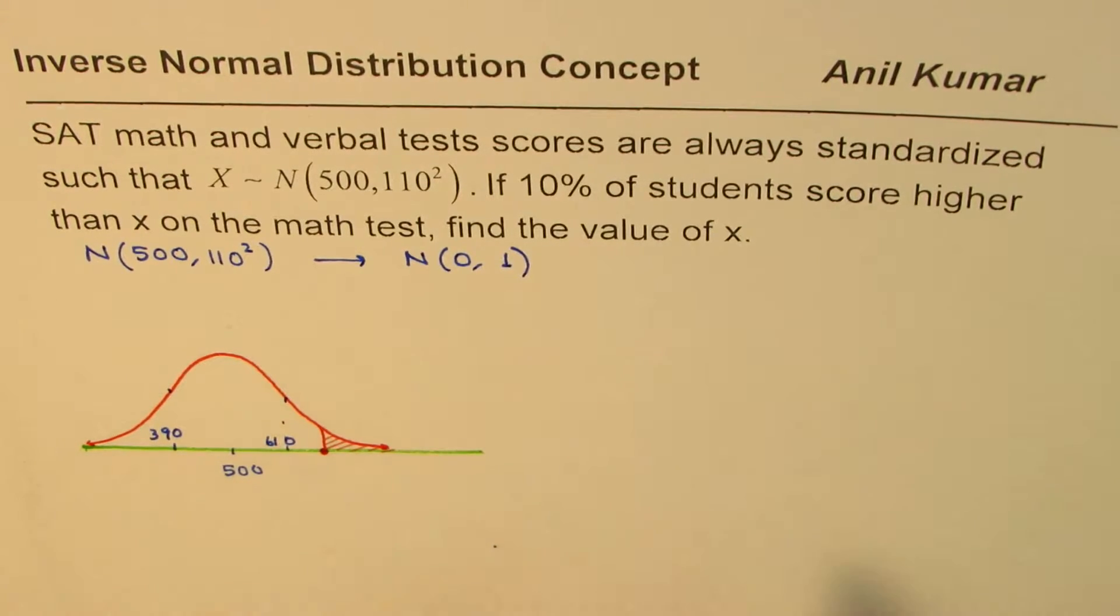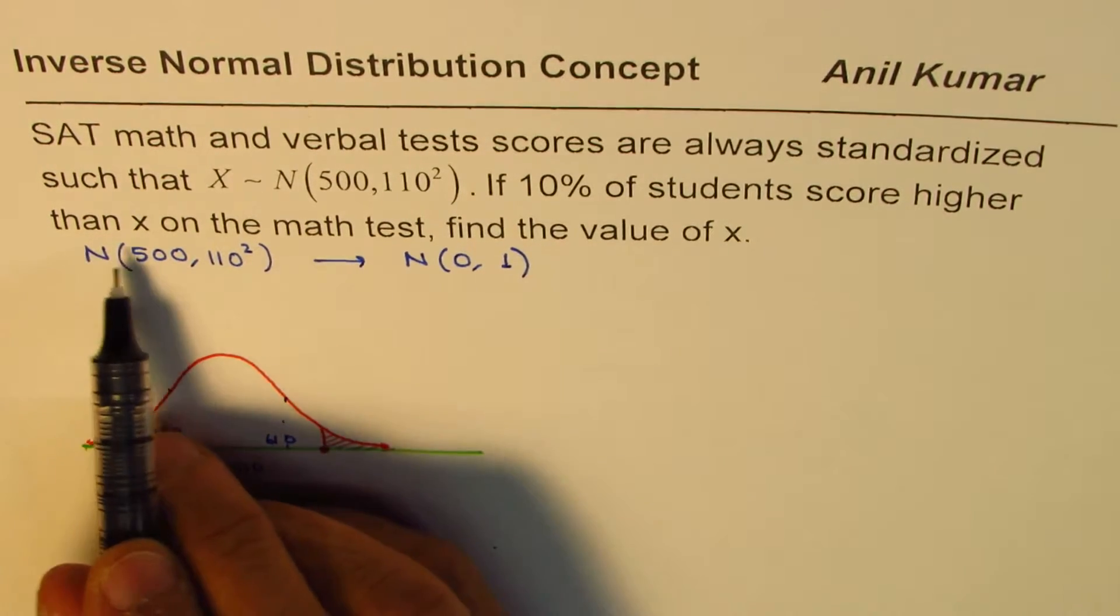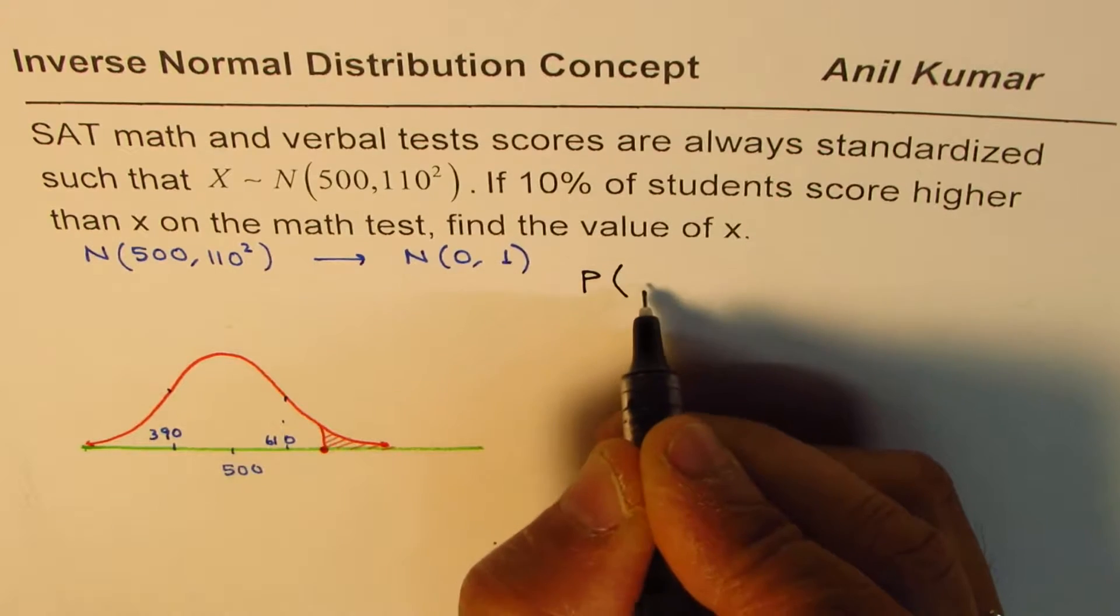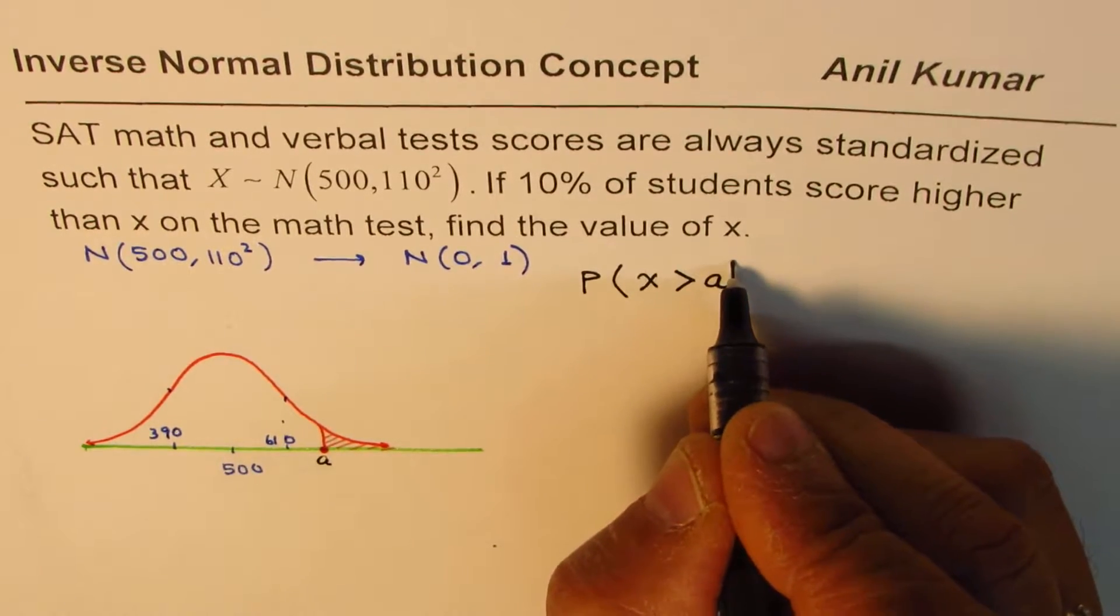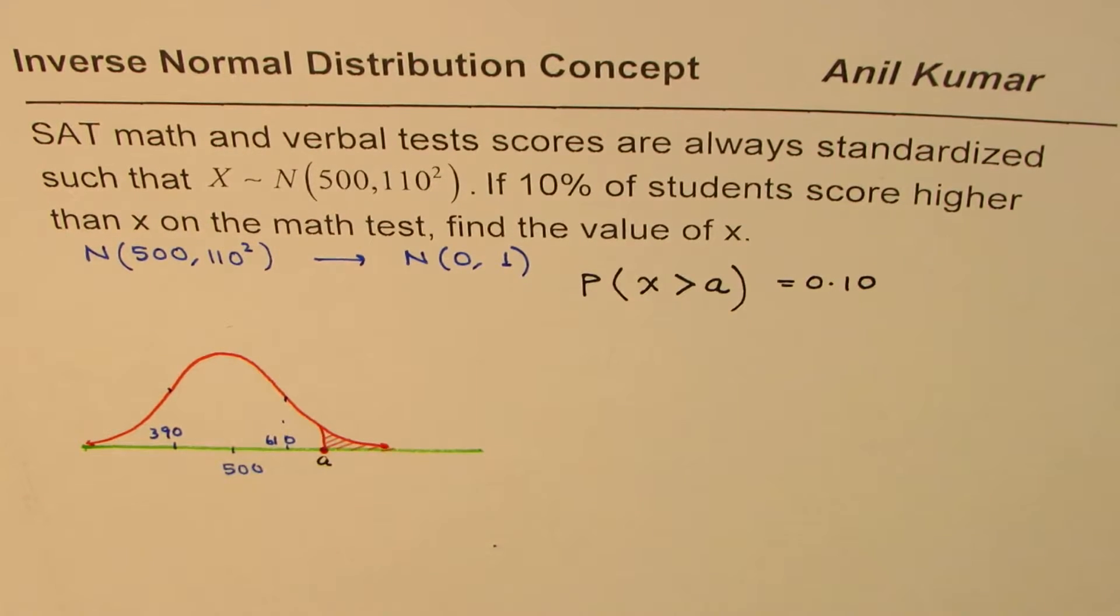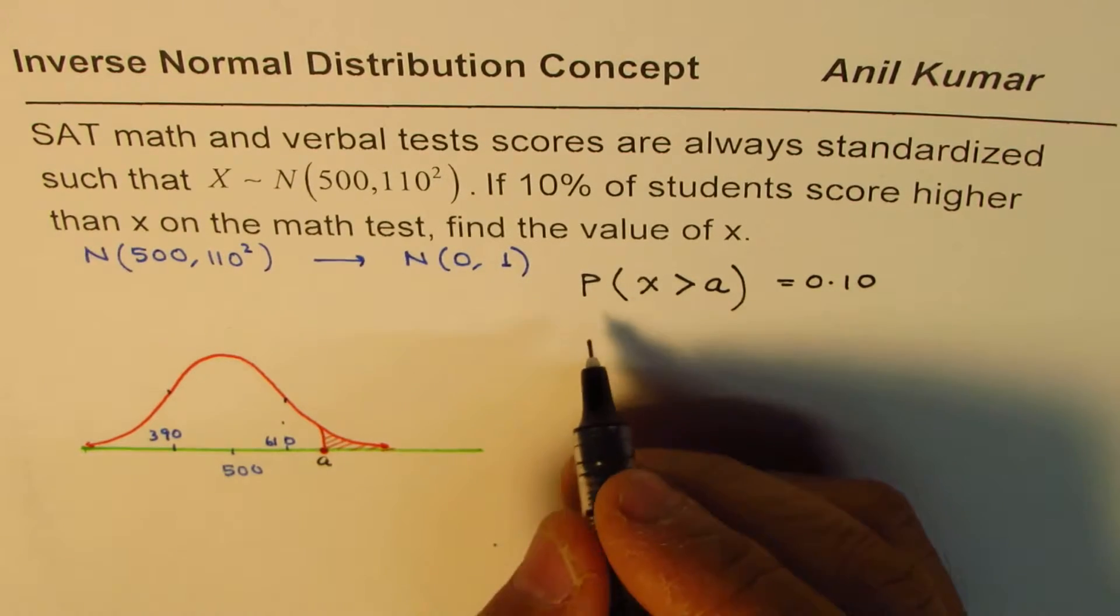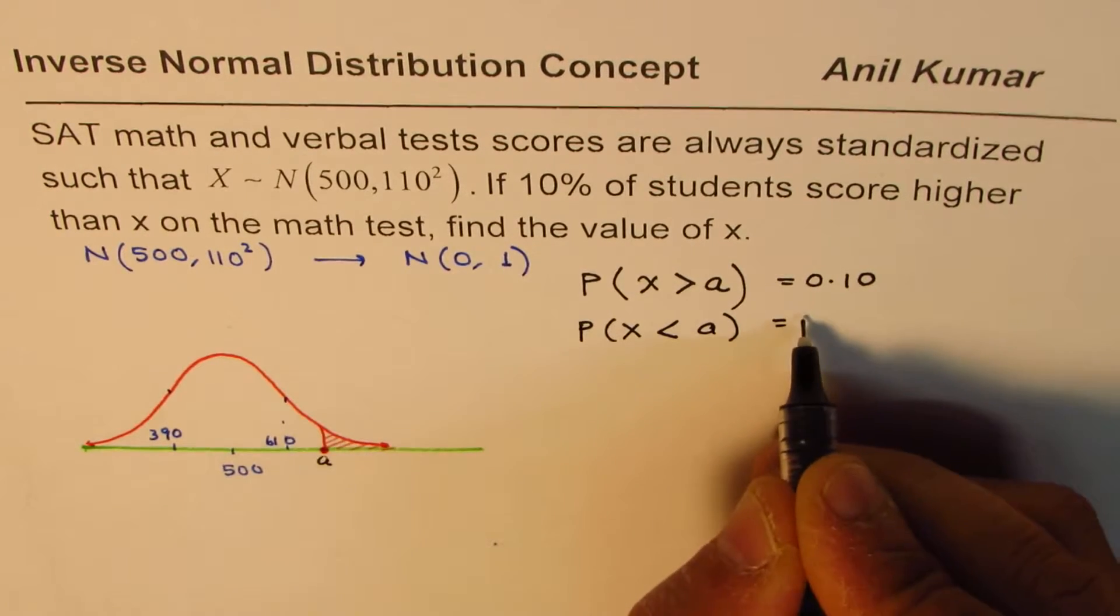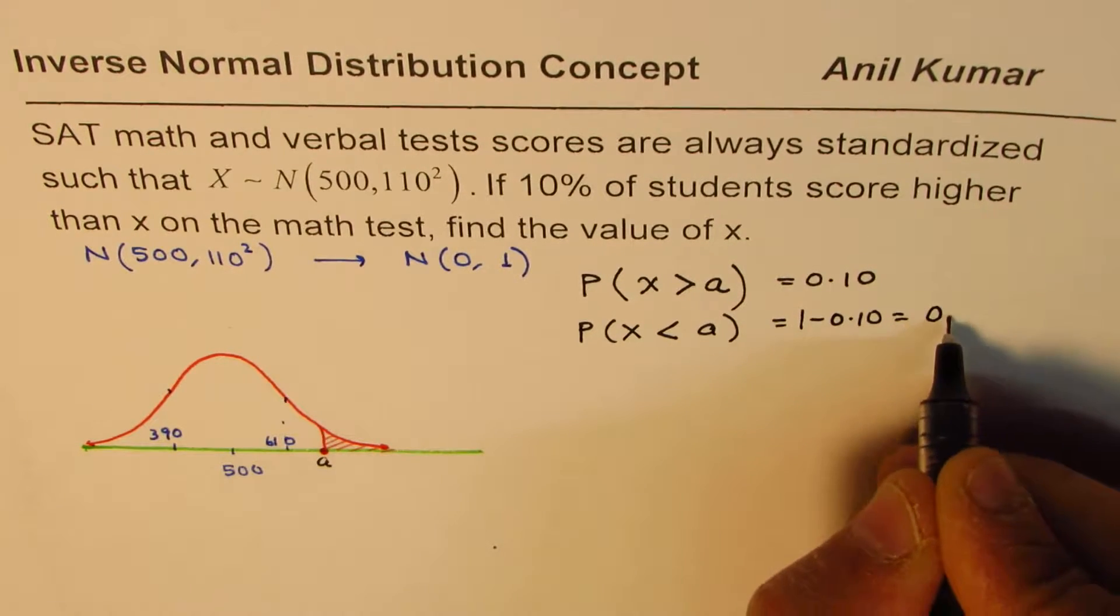We need to find if 10% of students score higher than x on the math test, find the value of x. So we are interested in finding that we are given the probability for the score. We'll call this value a for the time being, and that should be 10%, which means 0.10. So the equation is P(x > a) = 0.10. Since we have the tables from the left side, we'll write it as P(x < a) = 1 - 0.10 = 0.90. So 90%.